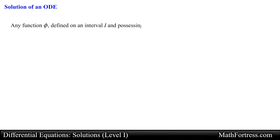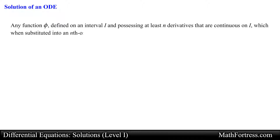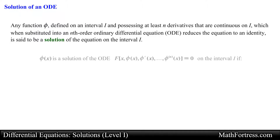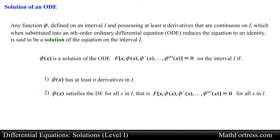Let's first start with the following definition. Any function defined on an interval I and possessing at least n derivatives that are continuous on I, which when substituted into an nth order ordinary differential equation (also known as an ODE) reduces the equation to an identity, is said to be a solution of the equation on the interval I. In other words, a solution of an nth order ODE is a function that possesses at least n derivatives and for which the equation equals zero for all x in I.